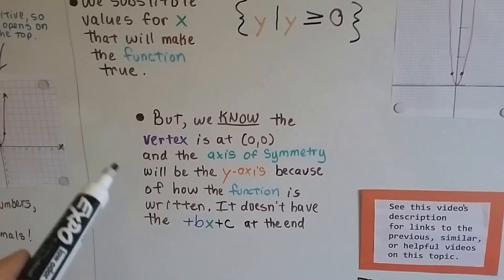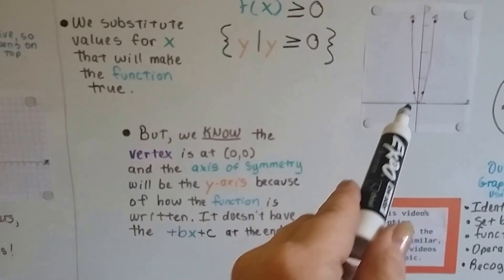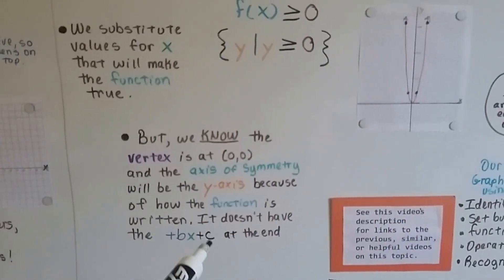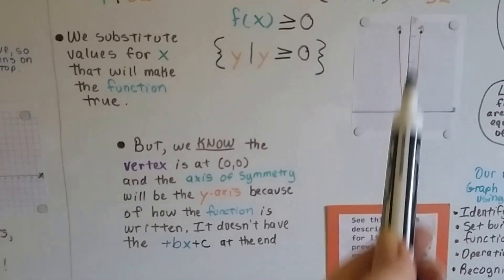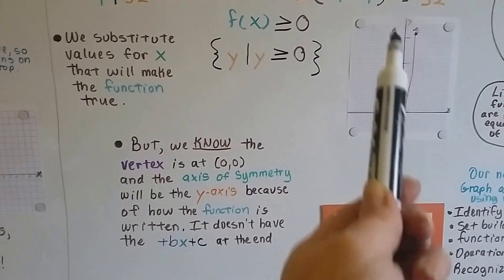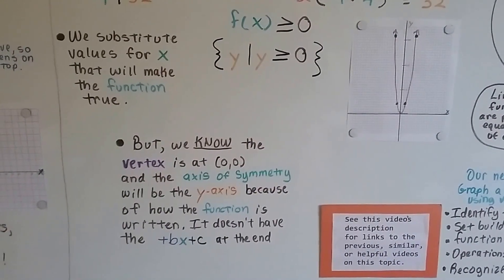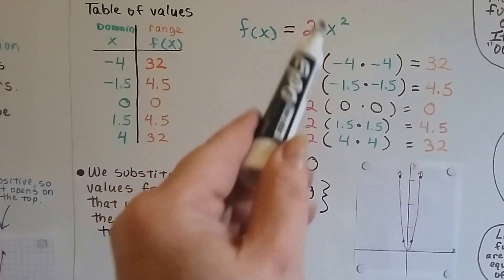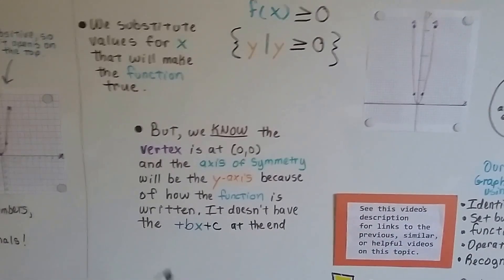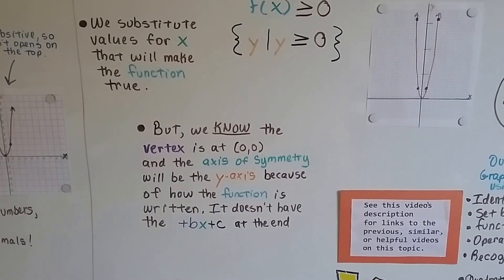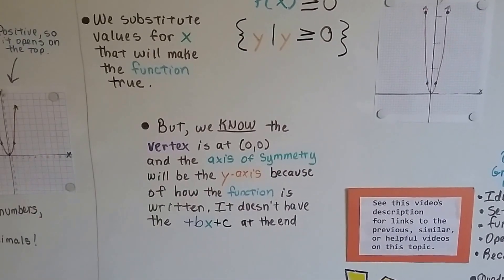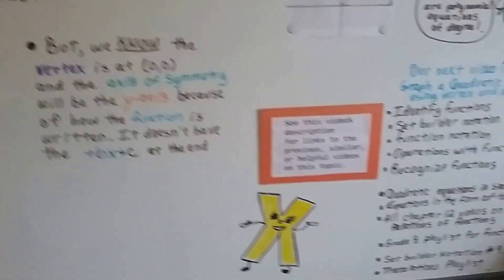We know the vertex is going to be at 0, 0 for this one. And the axis of symmetry is going to be this y axis because of how the function is written. Because it's this little version. See? It doesn't have that plus bx plus c at the end. I'm going to talk about that in the next video.